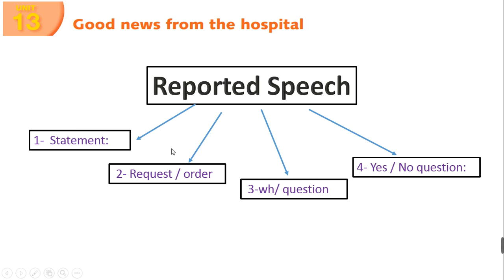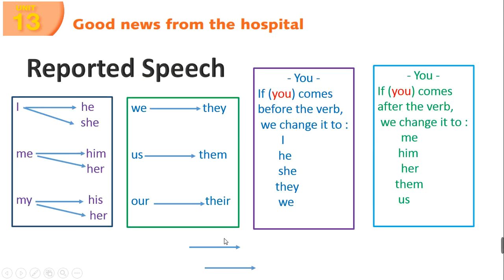We talked in period number 3 about statements and requests, while in this period we will talk about WH questions and yes/no questions. Before we start, let me remind you about changing the pronoun. If we have 'I' in the sentence, we change it to 'he' or 'she' according to the speaker. 'Me' changes to 'him' or 'her.' 'My' changes to 'his' or 'her.' 'We' changes to 'they,' 'us' to 'them,' 'our' to 'their.' When 'you' comes before the verb, we put 'I,' 'he,' 'she,' 'they,' or 'we.' When 'you' comes after the verb, we change it to 'me,' 'him,' 'her,' 'them,' or 'us.'